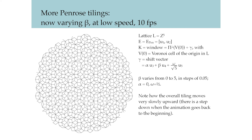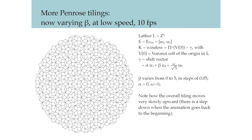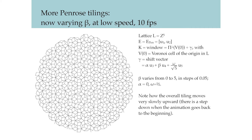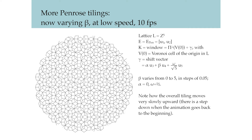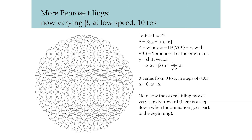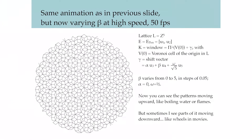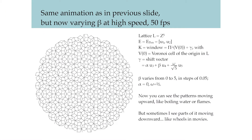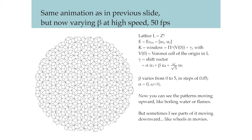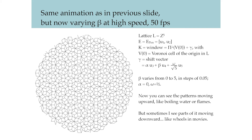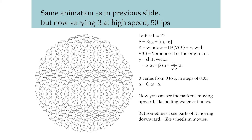Now let's create different dynamical patterns by varying some of the parameters. In this animation, we keep alpha to be zero, omega to be one half, and we vary beta from zero to five in steps of 0.05. Notice how the overall tiling moves very slowly upwards, so there is a step down when the animation goes back to the beginning. Now this animation is the same as the previous, but we vary beta at a higher speed at 50 frames per second. So now we can see the patterns moving upward like boiling water or flames, but sometimes we can see parts of it moving downward like wheels in movies.